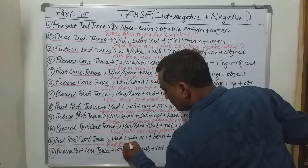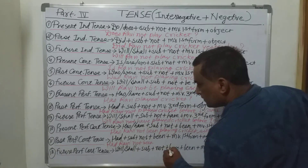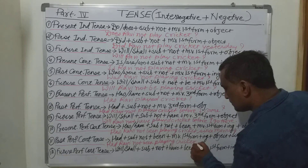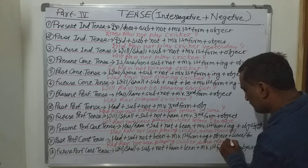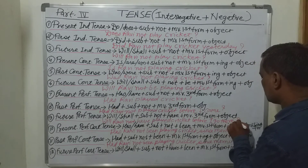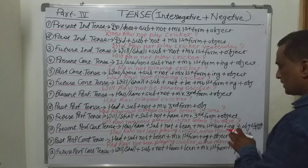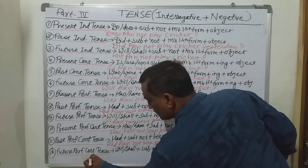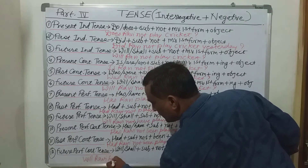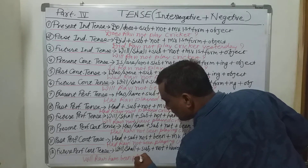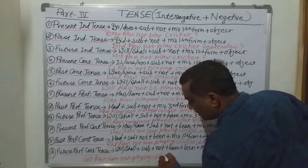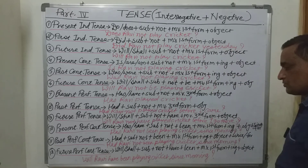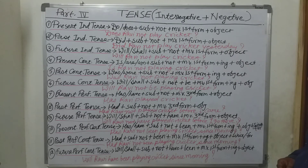For the past perfect continuous tense: 'Had Ravi not been playing cricket since morning?' And for the future perfect continuous tense: 'Will Ravi have been playing cricket since morning?'